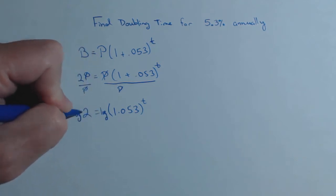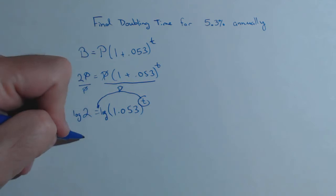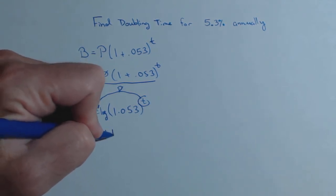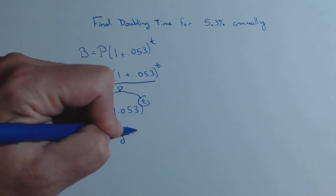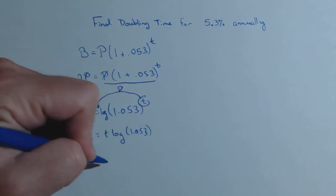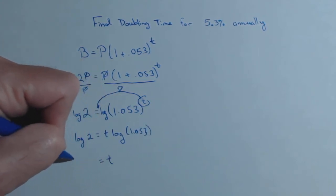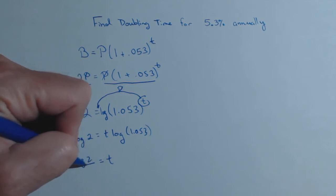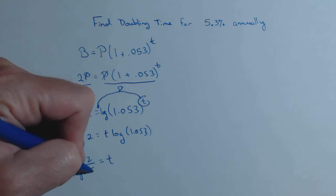We could take the log of both sides, which allows us to pull that t out front. So we get log of 2 equals t log of 1.053, and we get down to t equals log of 2 over log of 1.053.